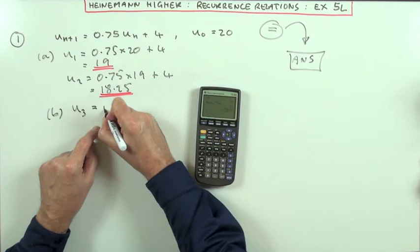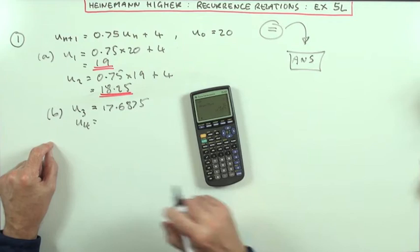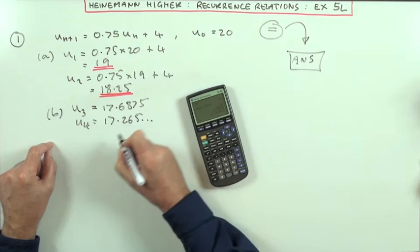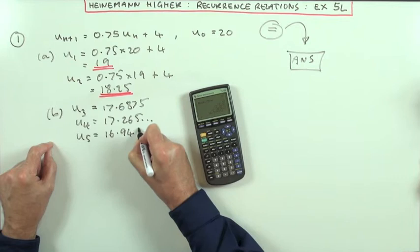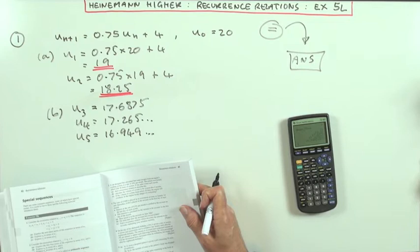Now I can just rattle these off. So U₃ would be 17.6875. Press again. U₄ is 17.265 and a few more. U₅ is 16.949 and a few more. So that's it.